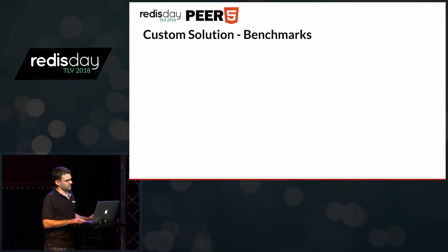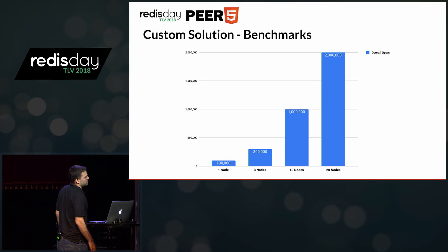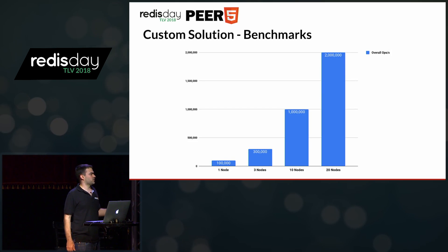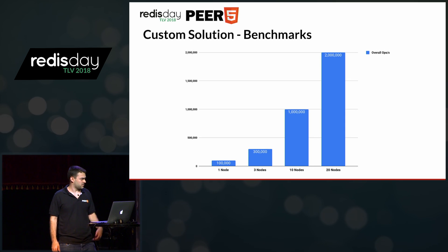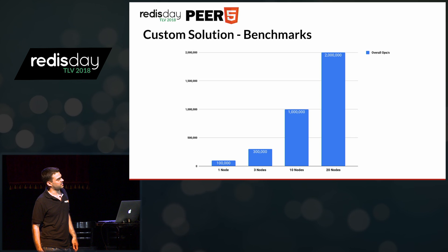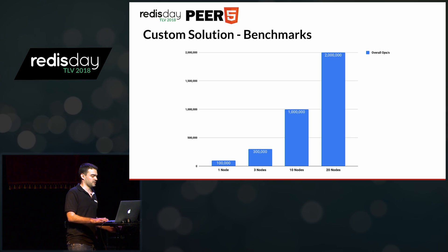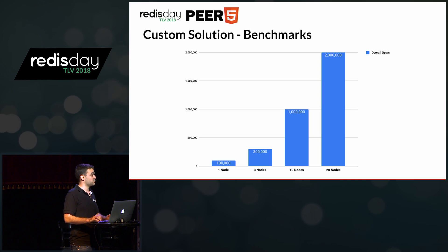We ran the same benchmark again. With one node we achieved 100,000 messages per second. Three nodes gave 300,000 messages per second, and so on — basically linear scaling. Twenty nodes reached two million messages per second, and that's when I got an alert from my cloud provider that I was spending too much money on benchmarks, so I stopped.